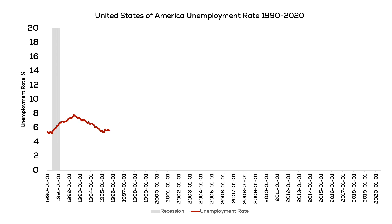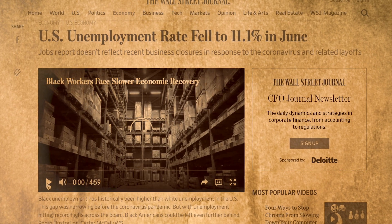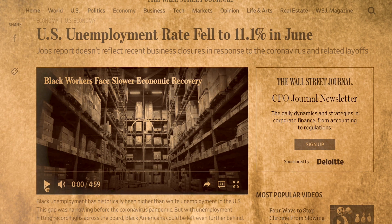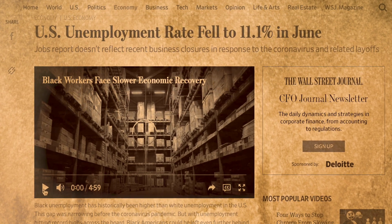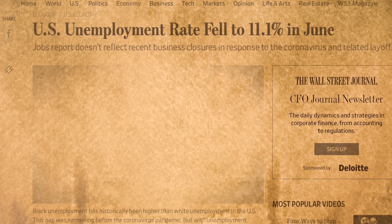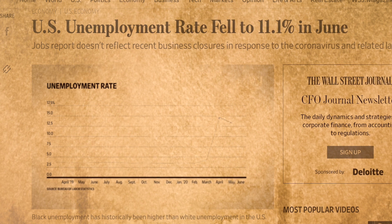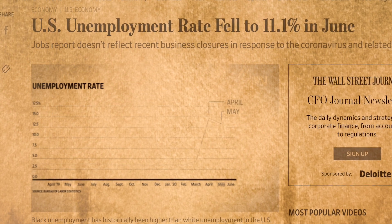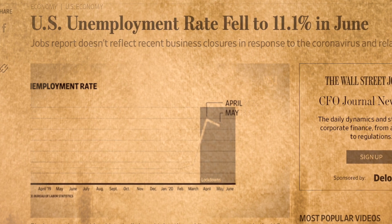Looking at the 30-year graph of the U3 unemployment rate: the U3 unemployment rate is popular and it is usually the one that is referenced in the news. After two months of unprecedented increases, the U3 unemployment rate took a surprising turn in May — it went down. This dip was a hopeful sign that the economy might be bouncing back from coronavirus lockdowns.